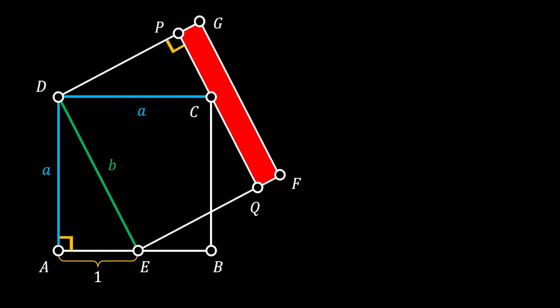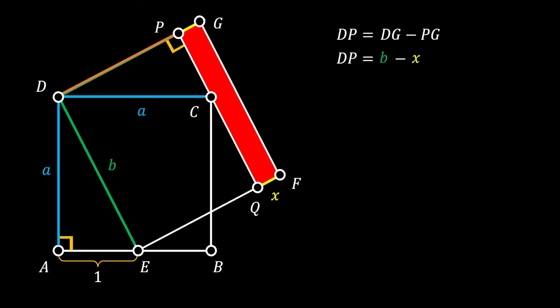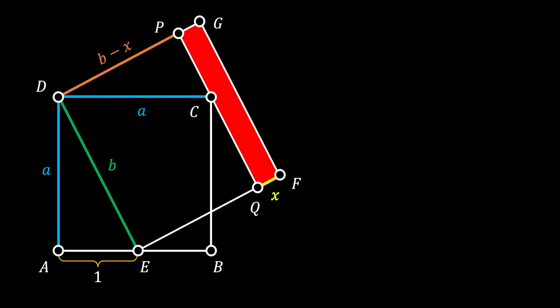You can notice that side DC is also the side of our smaller square, so it has length 'a', and side DG is the side of our bigger square, so its length is 'b'. The line QF, representing the side of the rectangle, is marked as 'x'. Sliding that side upward, PG also equals 'x'. Therefore, side DP equals DG minus PG, which is b minus x.